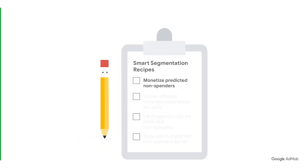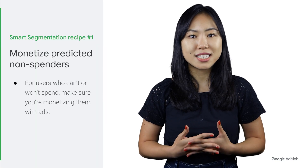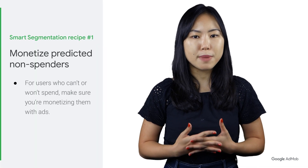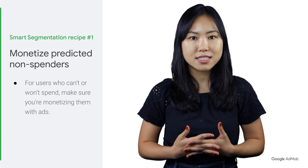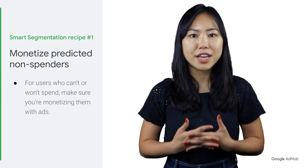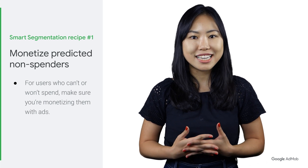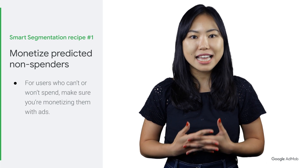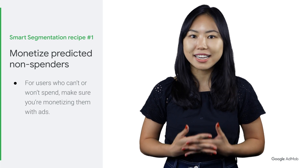Our first recipe is monetizing and showing ads to your predicted non-spenders. Smart segmentation helps you predict which users are unlikely to spend within an app and then attempts to show them ads. Doing so provides a simple method of increasing the ad revenue you can gain from non-spenders of your app, while maintaining a premium ads-free experience for your spenders as well as your likely spenders.